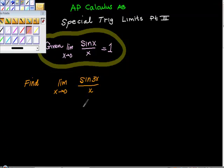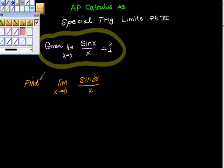This is the last of these videos on special trig limits. This is part 3, AP Calculus AB. Again, given that the limit as x goes to 0 of sine x over x is 1,